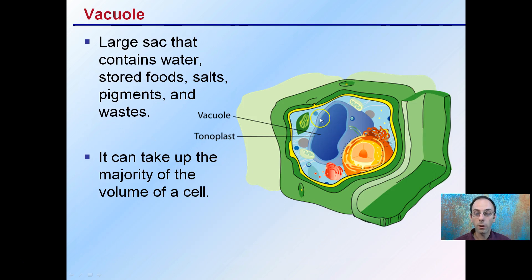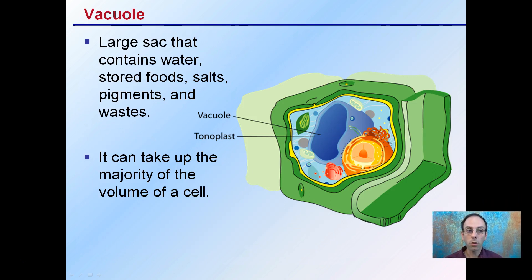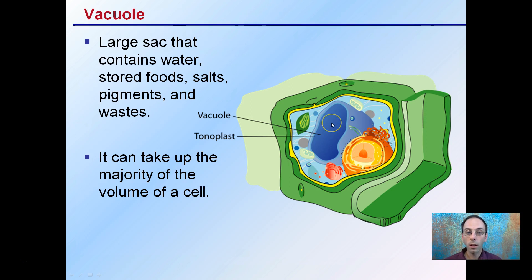Vacuoles are a large sac that contains water, stored food, salts, pigments, and other waste products. They can take up the majority of the volume of the cell — it can vary, but up to about 90 percent of the cell.